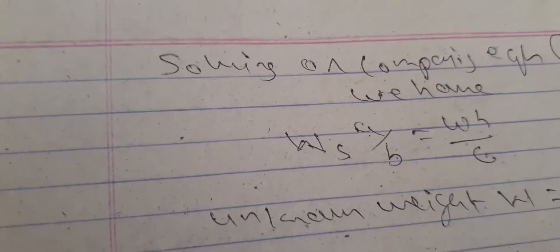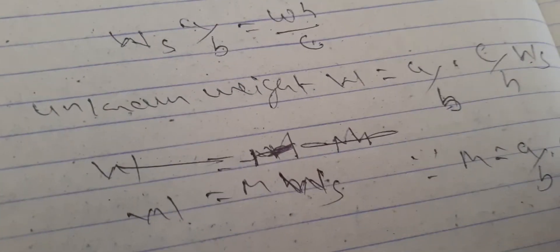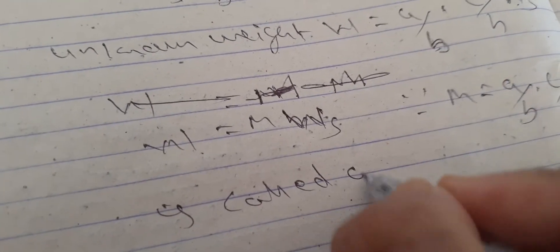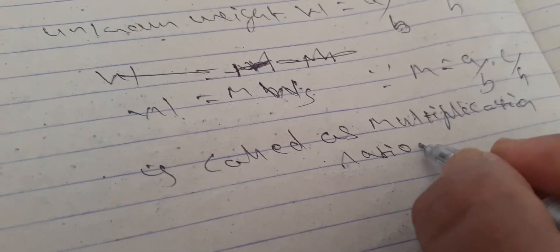Since M equals A by B into C by H, which is called as multiplication ratio of the scale.